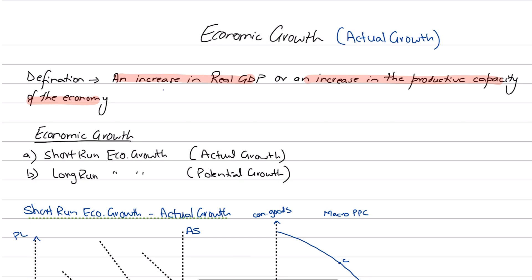When we talk about an increase in real GDP, what we're referring to is that our actual output is increasing, which means that actual growth is occurring. Because when real GDP is going up, that is defined as actual growth, while an increase in productive capacity is defined as potential growth. So within the definition of economic growth, we can see two aspects: one where actual output is going up, and one where potential output is going up.